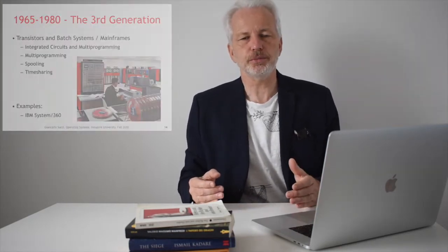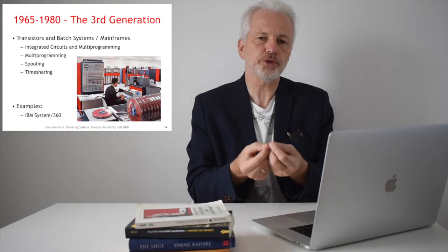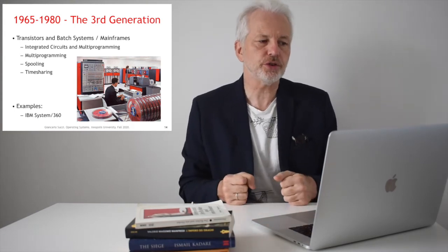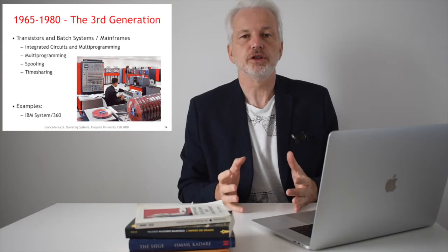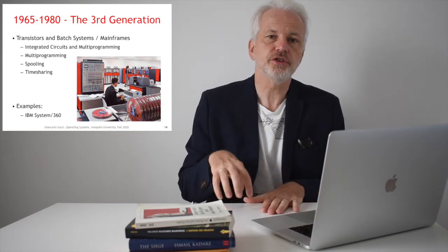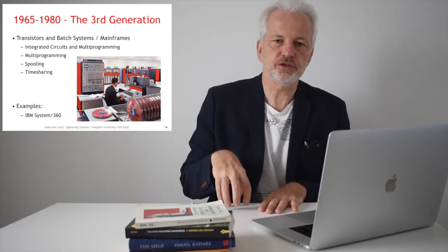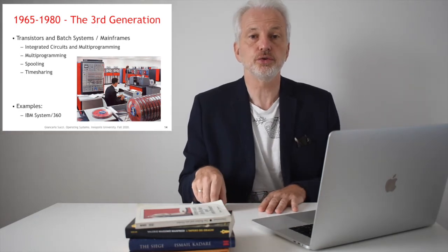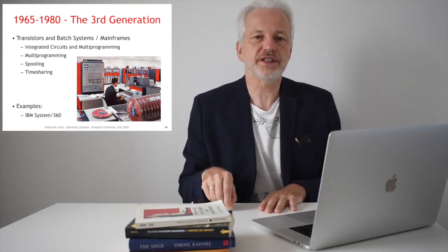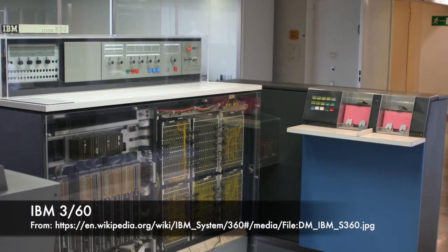The third generation of computers came with the adoption of integrated circuits, producing further miniaturization. This resulted in the possibility of multi-programming — multiple programs running at the same time — through spooling (simultaneous peripheral operation online) and time-sharing, which means giving a small amount of CPU time very fast to different users or programs, giving the impression of multiple processors while only one processor switches very fast between processes. A typical example was the IBM 360.